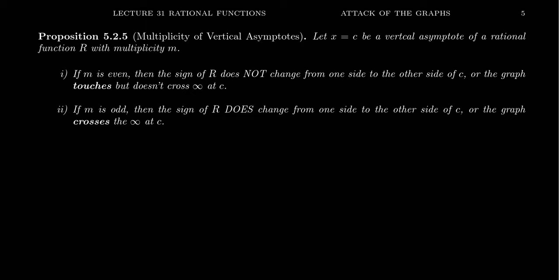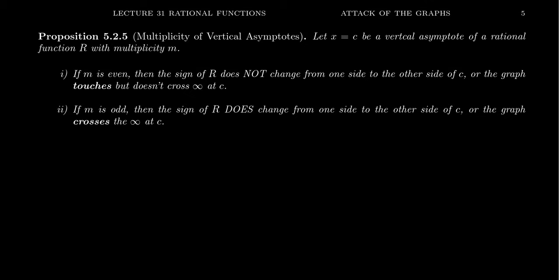Our goal is to graph rational functions without the use of technology whatsoever. Many of the techniques involved are similar to those used to graph polynomial functions. We need to know the end behavior and how the function behaves near an x-intercept. For rational functions, we also have to deal with how the function behaves near its vertical asymptotes, which are kind of like the opposite of x-intercepts. The vertical asymptotes aren't where we cross the x-axis — they're where we cross infinity, if you like to think of it that way.